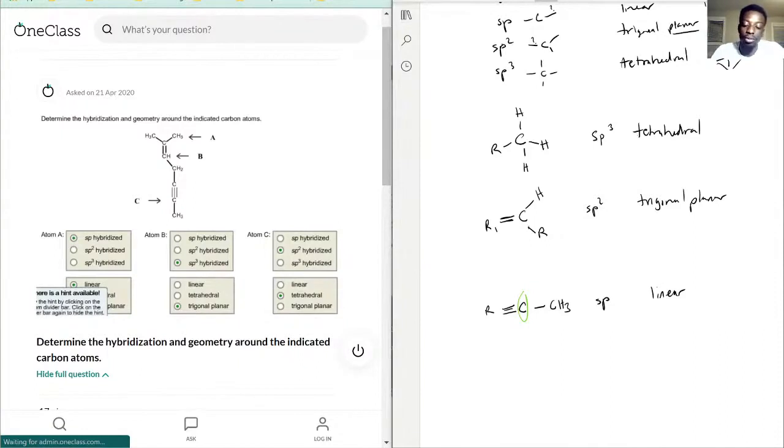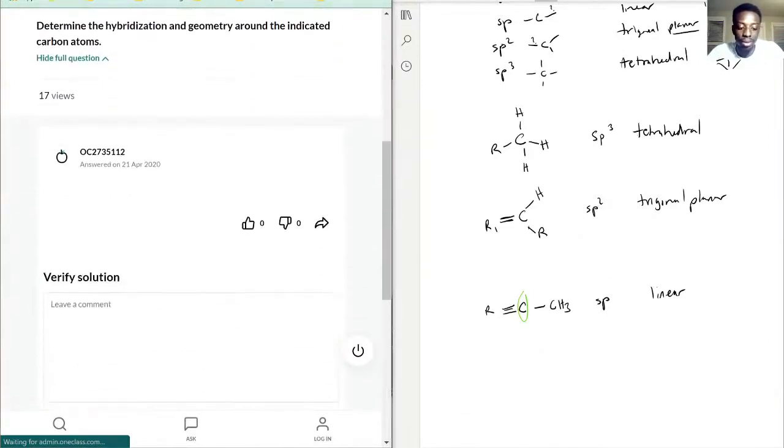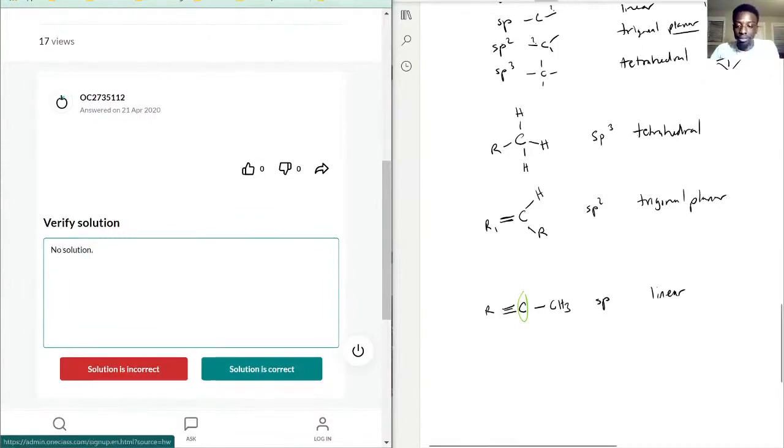So that's what we have for the geometry and hybridization of each indicated carbon. Okay, so let's see. So hopefully we did this correctly.